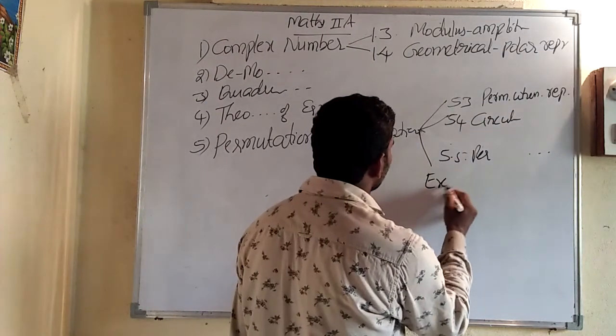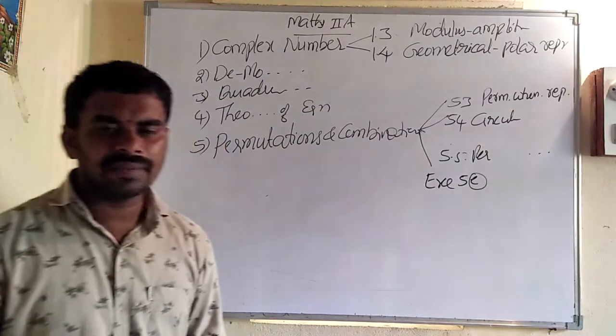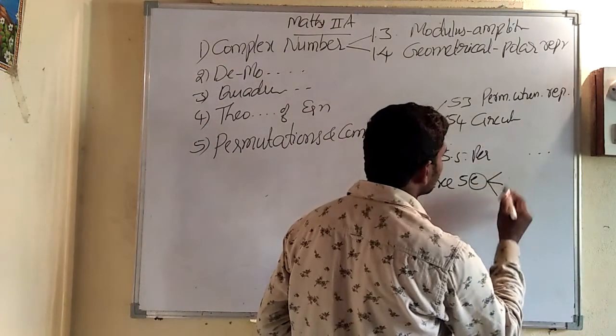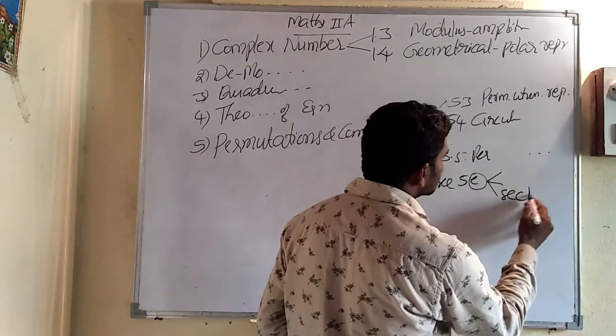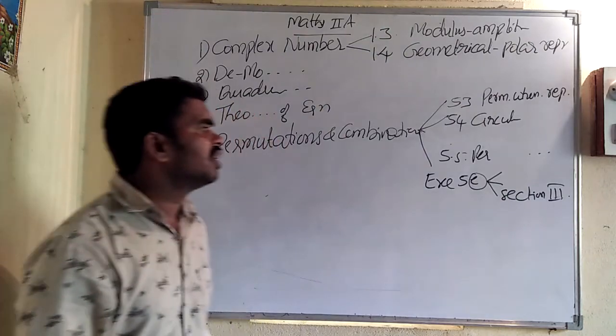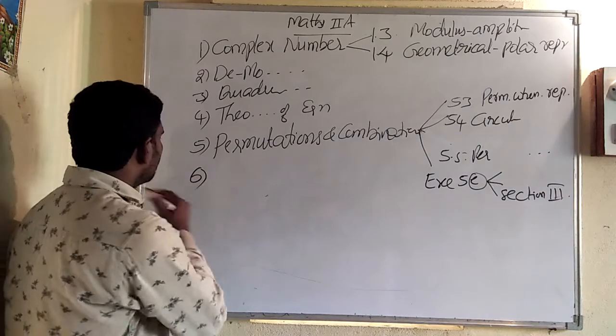And also in exercise 5E, if you open the textbook, in that exercise 5E we have three sections. Among that, section 3 is completely removed. The sums which are in section 3, those are removed.